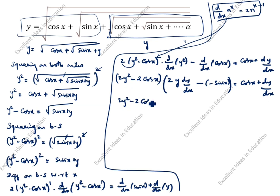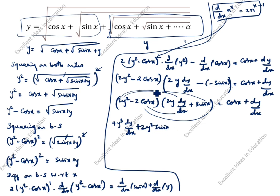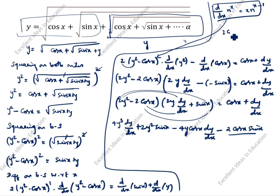Again expanding: 2(y squared minus cos x) into (2y dy/dx minus sin x) equals cos x plus dy/dx. Multiplying through: 2y squared times 2y is 4y³ dy/dx, plus 2y squared sin x. Second term: minus 4y cos x dy/dx, minus 2 cos x sin x. Now, 2 cos x sin x equals sin 2x — this is the formula.